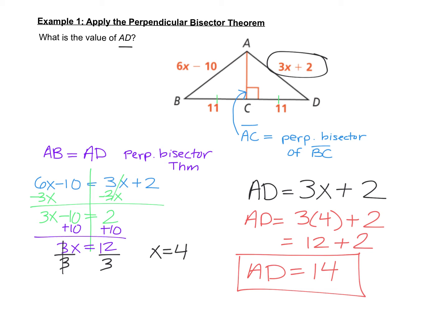We also know AB equals 14, since both should be equal. To double-check: plugging x equals 4 into 6x minus 10 gives 6 times 4 equals 24, and 24 minus 10 equals 14. So both AD and AB are 14.